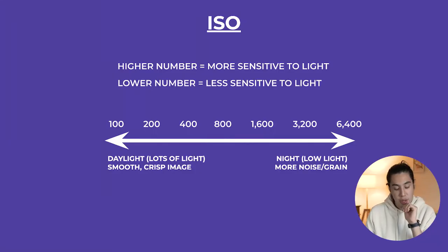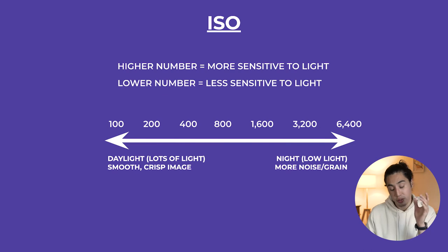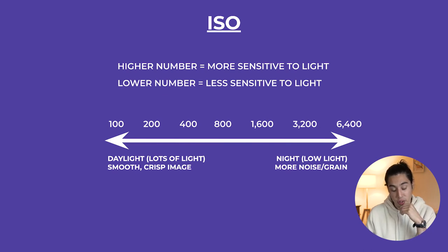For me, 800 is kind of the sweet spot — it's not too sensitive and not too insensitive, kind of the perfect middle ground. As you can see on the scale at the bottom, 100 is a low ISO which is less sensitive to light, in comparison to 6400 on the other end of the scale — a brighter image because it is more sensitive to light.